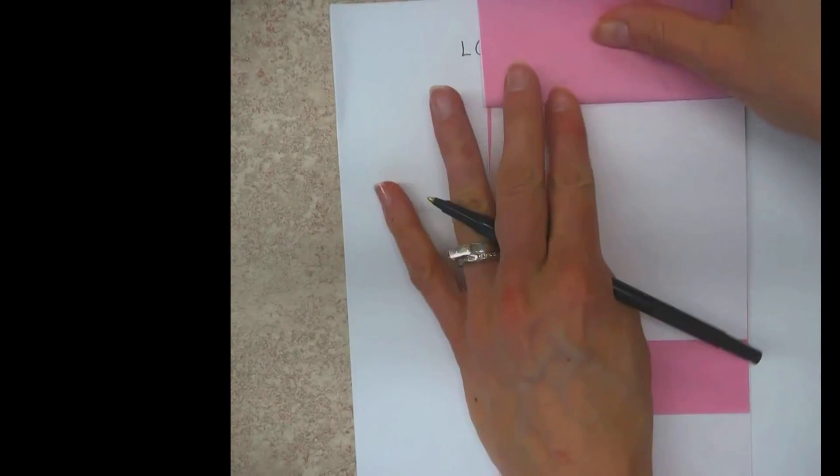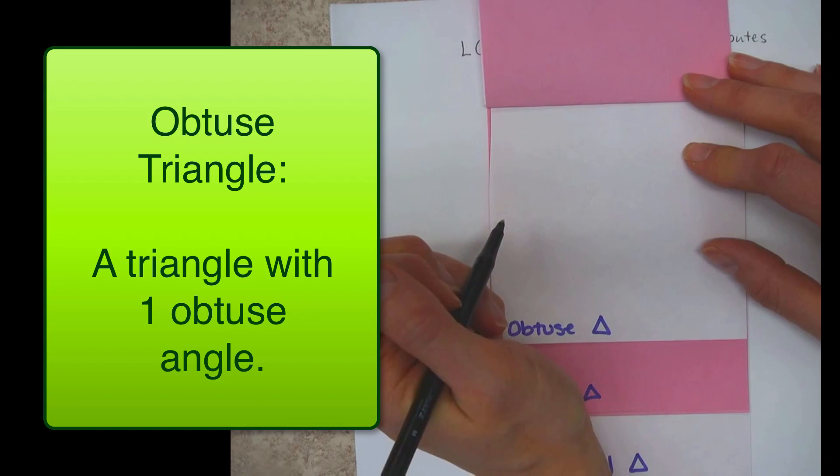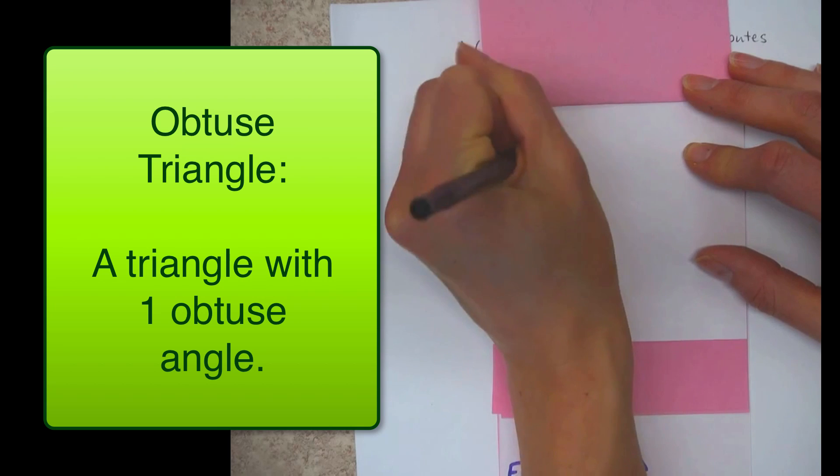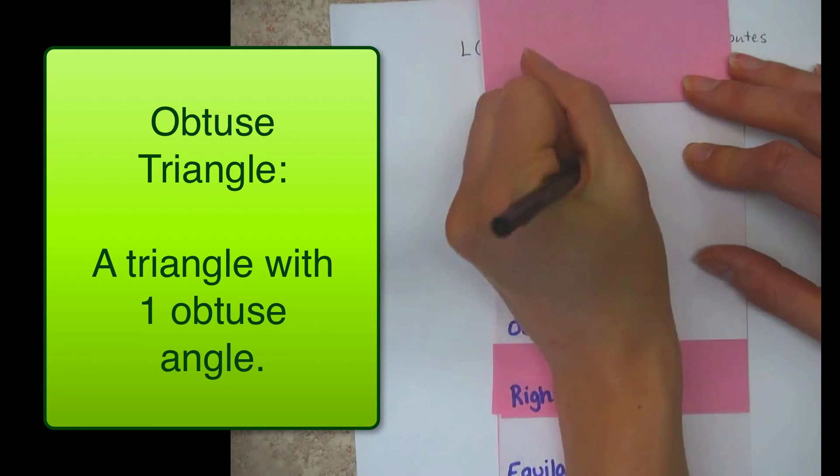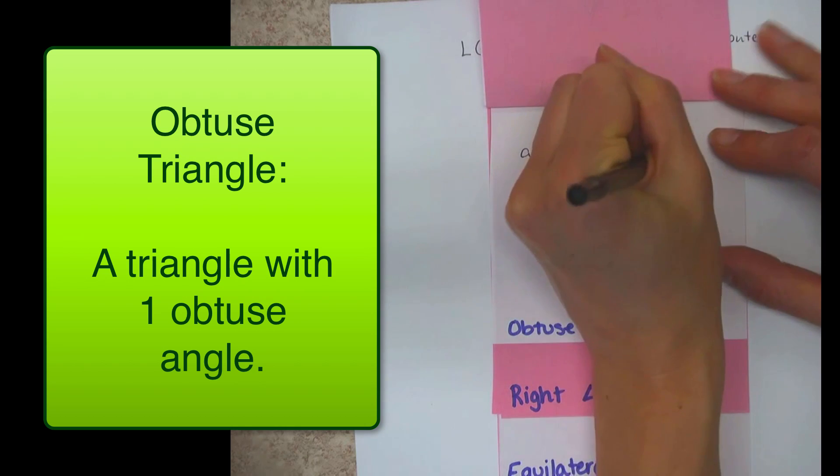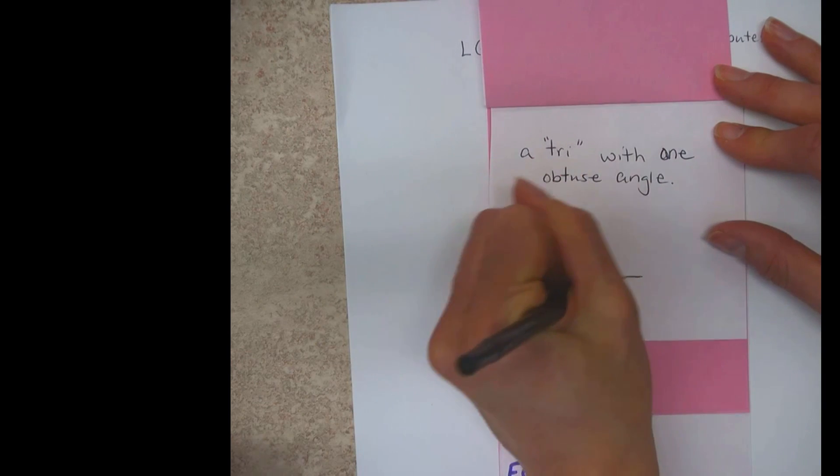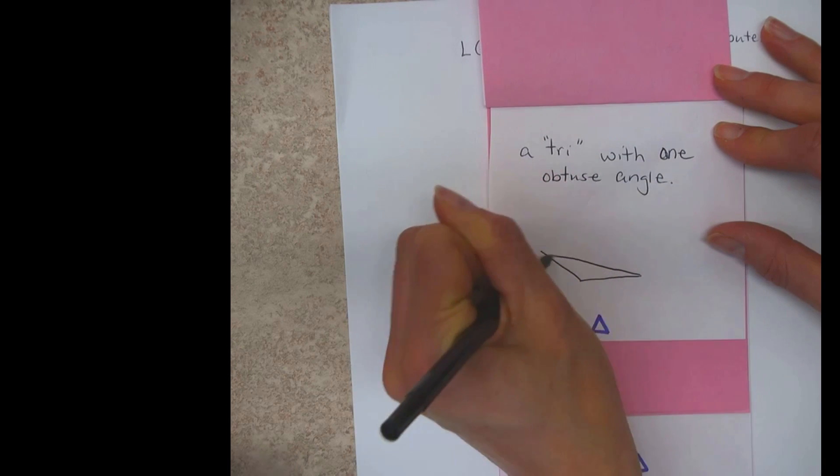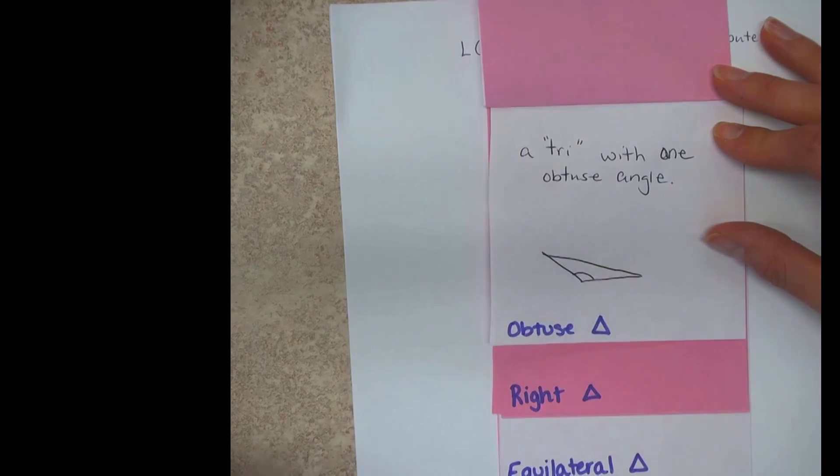Obtuse. If you know acute is a little angle, an obtuse angle is a big angle. So a triangle with an obtuse angle. You can only have one obtuse angle. So a triangle with one obtuse angle. Then you should have, this is probably the most common one, something like that. And you can see the big angle in there.